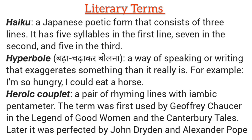What is haiku? Haiku is a Japanese poetic form that consists of three lines. It has five syllables in the first line, seven in the second, and again five in the third.